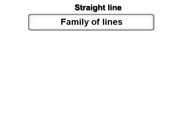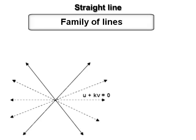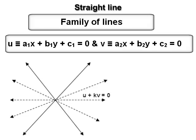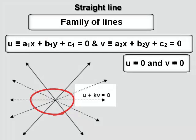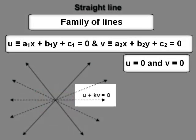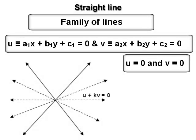Family of lines — an important theorem: if u = a₁x + b₁y + c₁ and v = a₂x + b₂y + c₂, then u = 0 and v = 0 represent two lines. If these two lines are intersecting, then u + kv = 0 (where k is a parameter) represents a family of lines passing through the point of intersection of the lines u = 0 and v = 0.